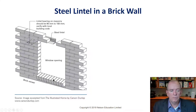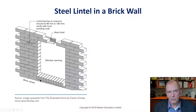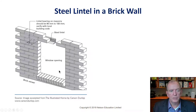You see row lock sills all the time, but for the most part builders have moved to precast concrete because it's quicker to install — you put in one long strip and you're done. You don't have to lay all those individual bricks. Building codes always change, and most builders today use precast concrete sills for that reason.